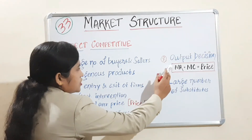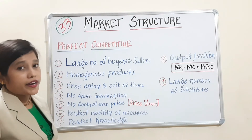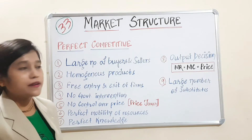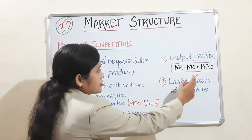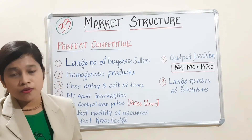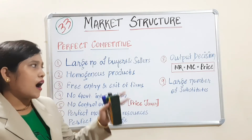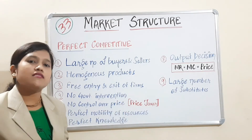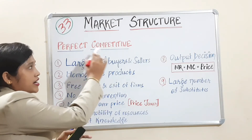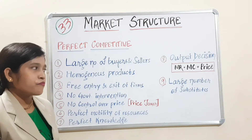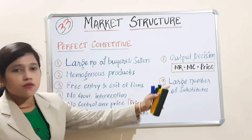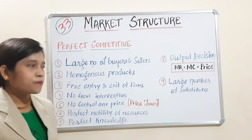Next is the output decision — that means at what point you should decide how much output to be produced. The point is decided where MR equals MC equals price. MR is marginal revenue and MC is marginal cost. We will discuss this in detail through graphs and examples in the individual lecture on perfect competitive market. For now, just remember: output is decided at the point where MR = MC = price.